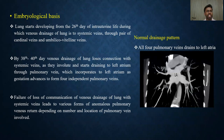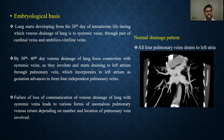Coming to the embryological basis, the lung starts developing from 26 days of intrauterine life, during which venous drainage of the lung is to the systemic veins through a pair of cardinal and umbilicovitelline veins. By the 48th day, venous drainage of the lung loses the connection with the systemic veins as they involute and starts draining into the left atrium through the common pulmonary vein. This common pulmonary vein incorporates into the left atrium as gestation advances to form four independent pulmonary veins. Failure of loss of communication of venous drainage with the systemic vein leads to various forms of anomalous pulmonary venous return, depending on the number and location of the pulmonary vein involved.